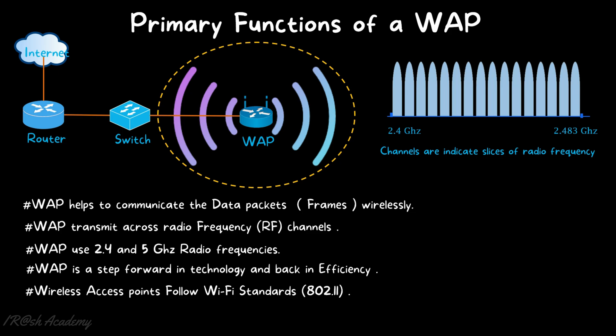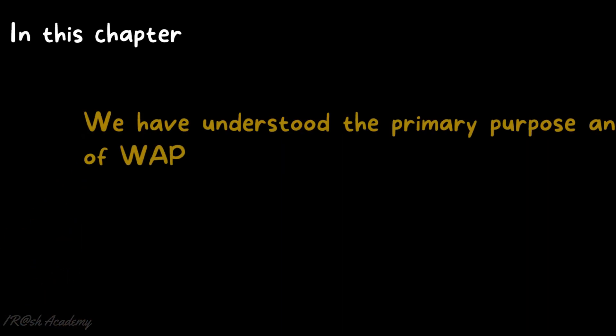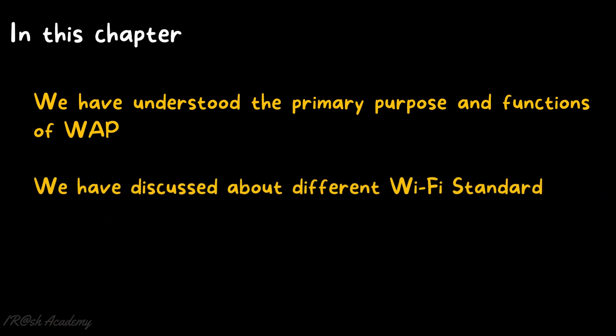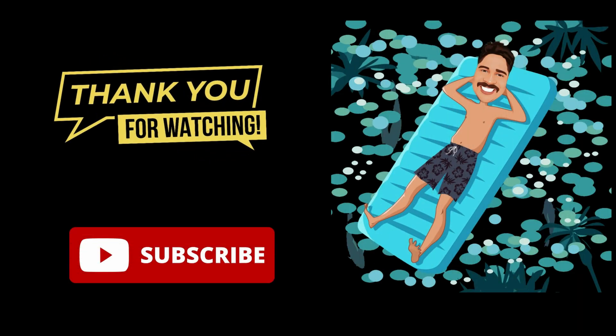Now let's see how a wireless access point can be identified in a network diagram. On screen, you can see the wireless access point symbols — using these two symbols, you can identify a wireless access point in a network diagram. Now it is time to wrap up this chapter. We have understood the primary purpose and functions of a wireless access point and discussed the different Wi-Fi standards. Thank you for watching and subscribe to the channel for more videos.